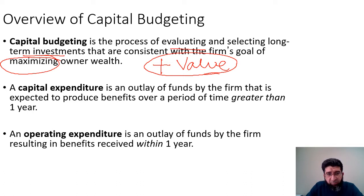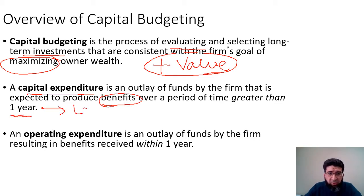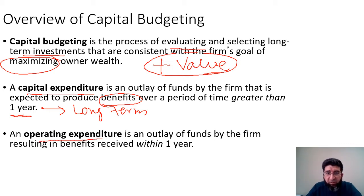Every long-term project will require certain funds. These are called capital expenditures, which is an outlay of funds by the firm that is expected to produce benefits over a period of time greater than one year — hence the long-term nature. We can differentiate capital expenditures from operating expenditure, which is an outlay of funds by the firm resulting in benefits received within one year.